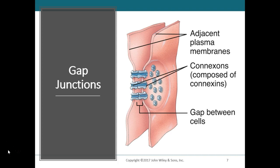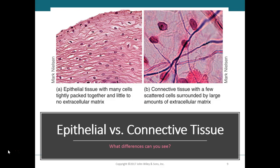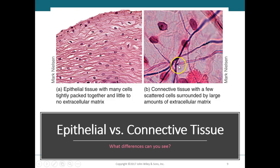There are major structural differences between epithelial and connective tissue. One is the number of cells in relation to the extracellular matrix. In epithelial tissues, cells are very tightly packed together with very little matrix outside the cell. In connective tissues, you've got a lot of extracellular material — fibers and other substances — between the cells, making the difference very easy to see.